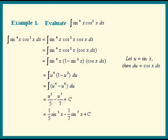Let's review this method. We took one of the odd factors and tagged it onto the dx. This leaves us an even factor, which can always be expressed in terms of the other function, via the trig identity, sine squared plus cosine squared equals 1.